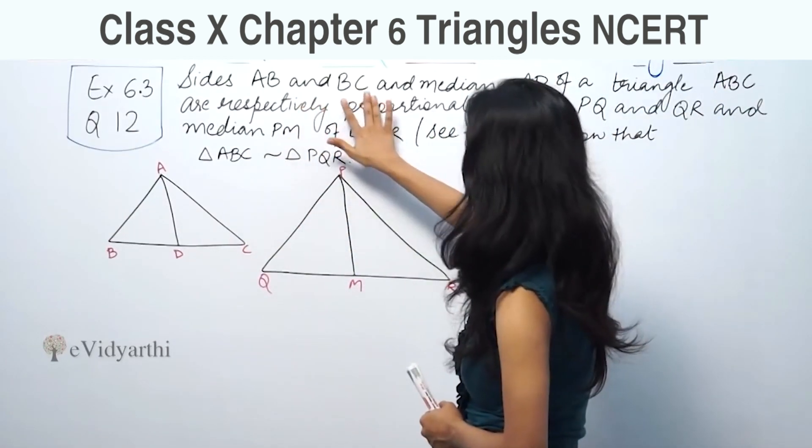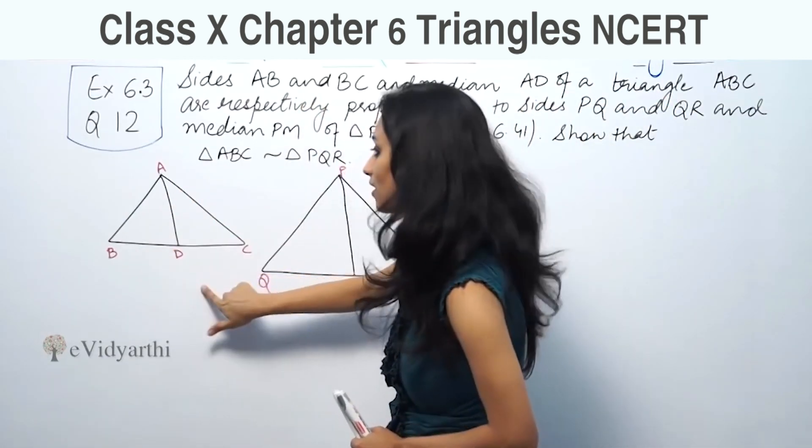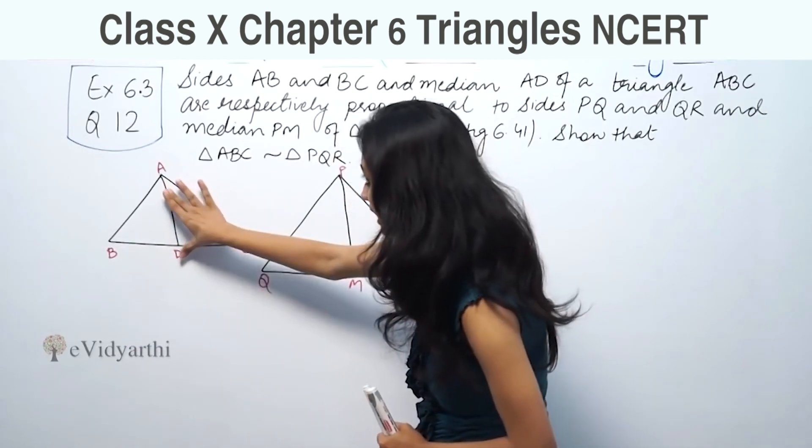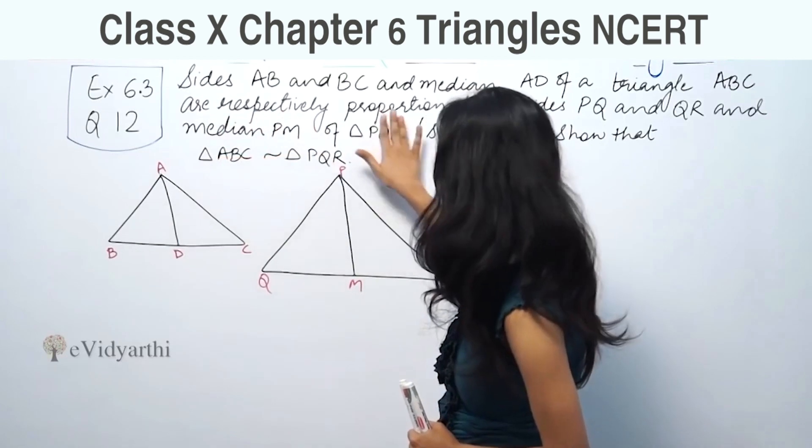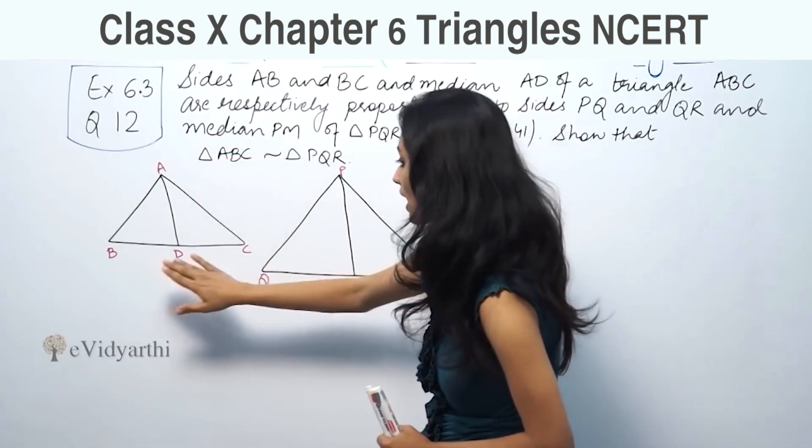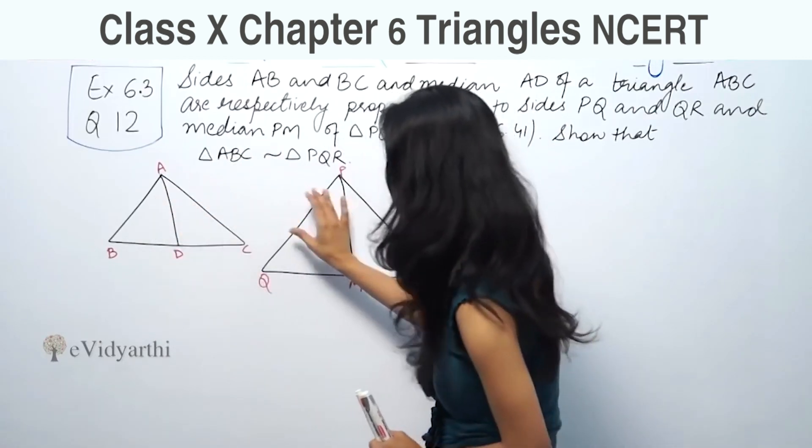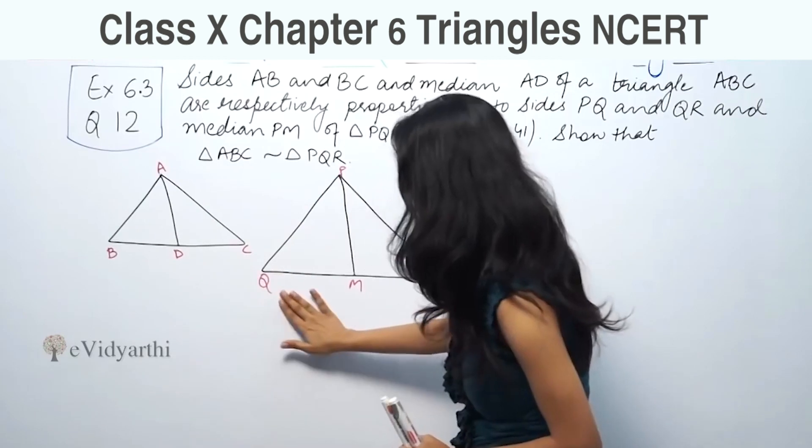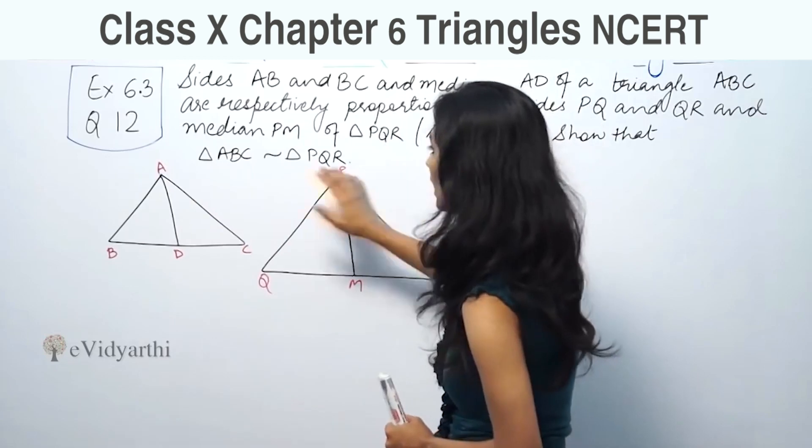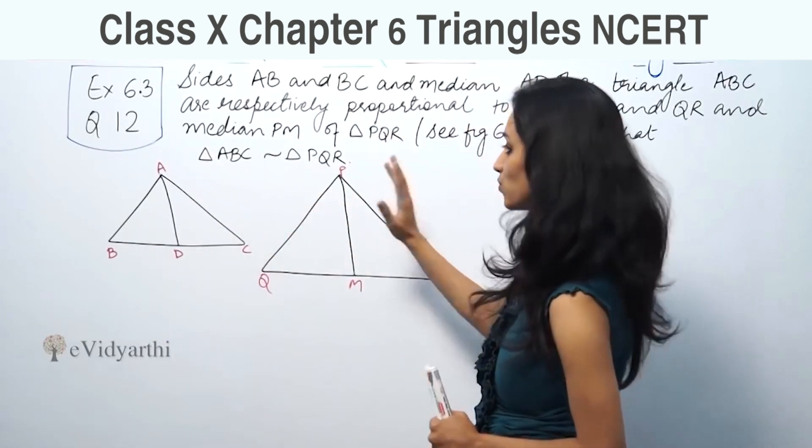Sides AB and BC and median AD of triangle ABC are respectively proportional to sides PQ, QR, and median PM of triangle PQR. Show that triangle ABC is similar to triangle PQR.